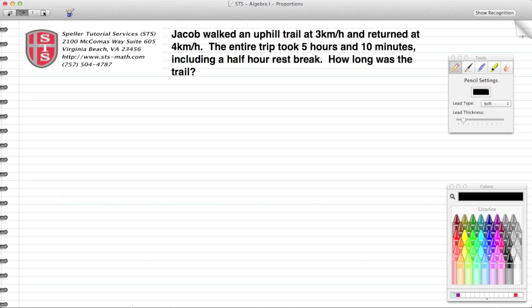The entire trip took 5 hours and 10 minutes including a half-hour rest break, and they want to know how long was the trail. This is a distance equals rate times time problem as well as a fractional equation problem. Let's start with our chart. We want to know the departure and the return - that's how we're going to split everything up. We're going to set up our column headings: we need to know the rate at which he left and returned, as well as the time it took, and we know that those two things will be multiplied and set equal to D or the distance.